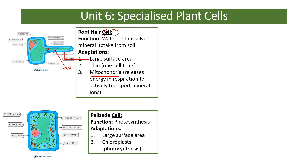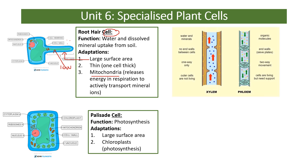Another type of plant cell often overlooked in revision is the palisade cell, found in the leaves of plants. Its function is to carry out the majority of photosynthesis. Accordingly, it has loads of chloroplasts, and its other adaptation is a large surface area so it can capture as much sunlight as possible.